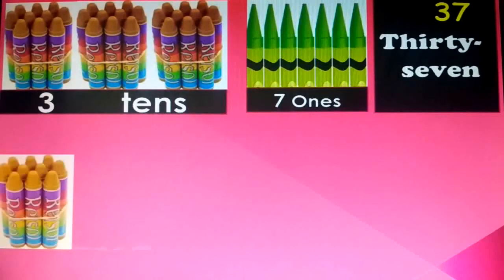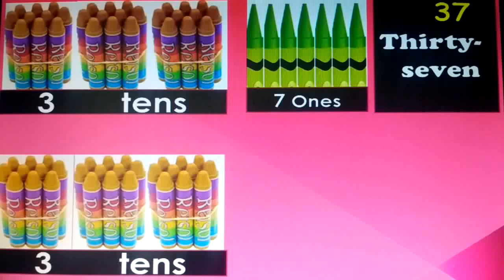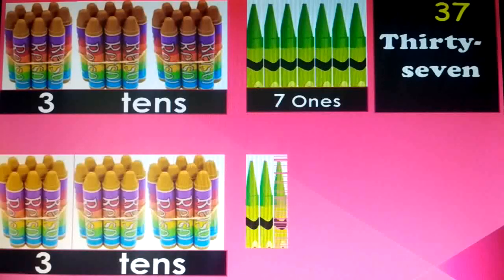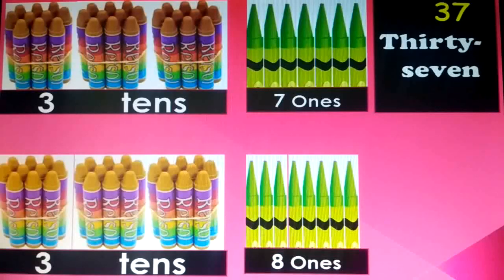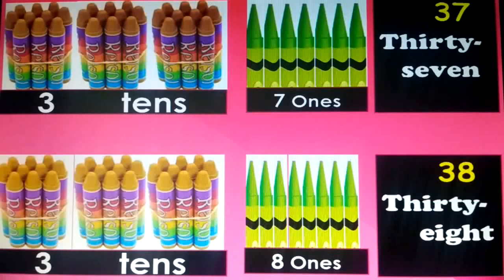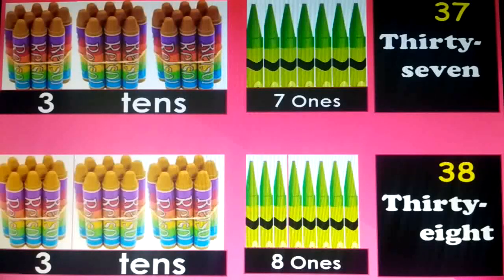1 ten, 2 tens, 3 tens, and 1, 2, 3, 4, 5, 6, 7, 8 — 8 ones. 3 tens and 8 ones is equal to 38. T-H-I-R-T-Y, 30, dash, E-I-G-H-T, 8. Thirty-eight.